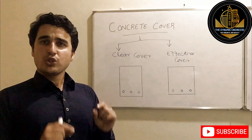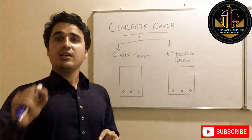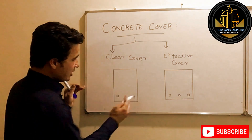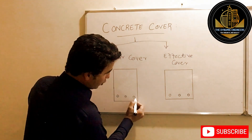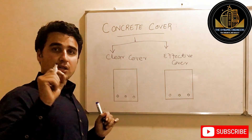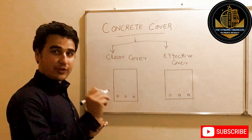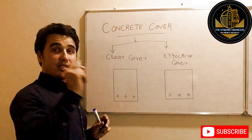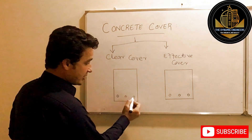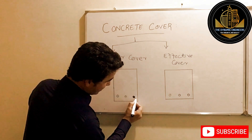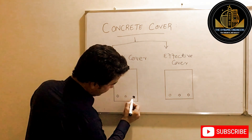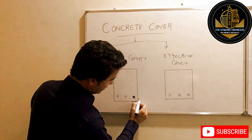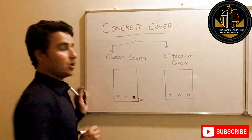Clear cover is the distance between the outermost fibers of any member and the steel rebar present in that member. Looking at this beam, three steel bars are present. The outermost fiber is this surface here, and the surface of the embedded steel bar is here. So this distance — between the outermost fiber and the surface of the embedded steel bar — is the clear cover.